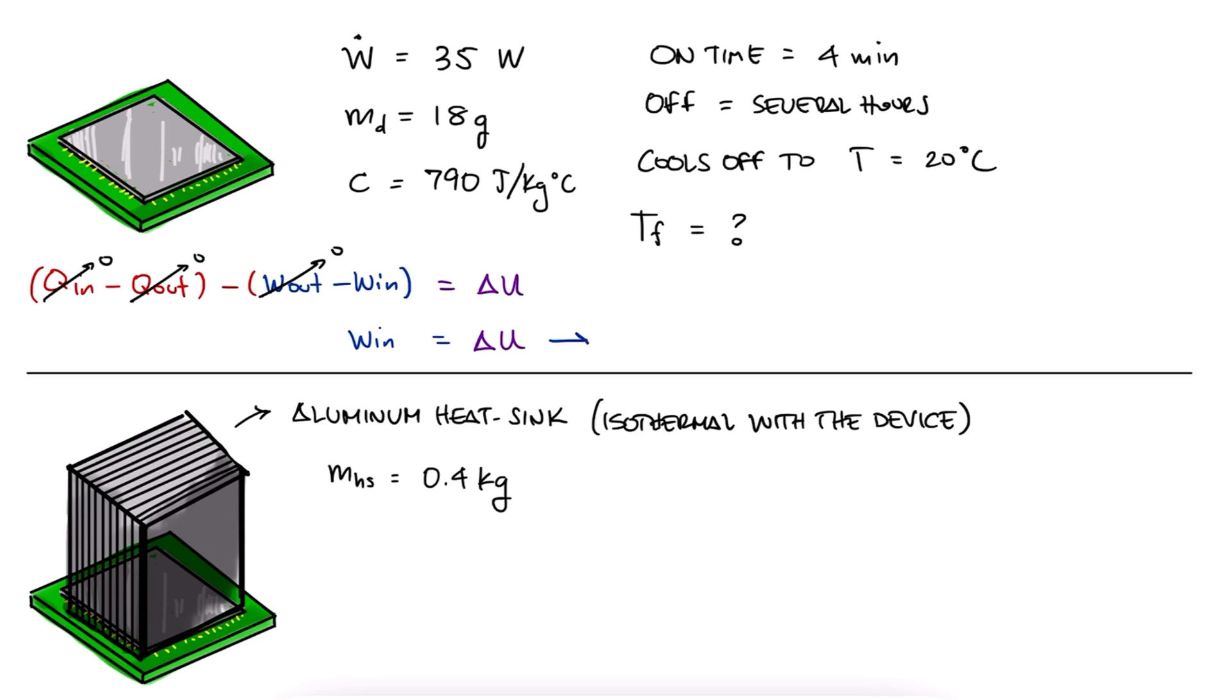The energy would be equal to the rate of energy W dot times the time it's on for in seconds. The change in internal energy would be equal to the mass of the device times the specific heat times the change in temperature. Since we're being told that the device is not used for a long enough period for it to cool down to the ambient temperature of 20 degrees Celsius, that will be our initial temperature when the device is turned on.